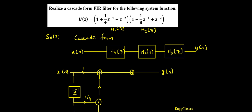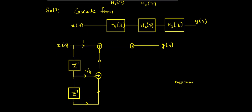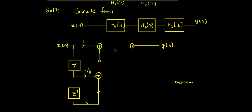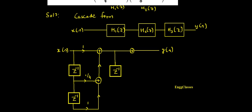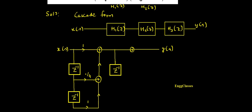Now I have to consider similarly for H2(z). Let me consider a delay element — here I will have the straight line first, then one delay element. After the delay element I have 1/8 z to the power minus 1, so I extend the line to an adder. This gets multiplied with 1 divided by 8.